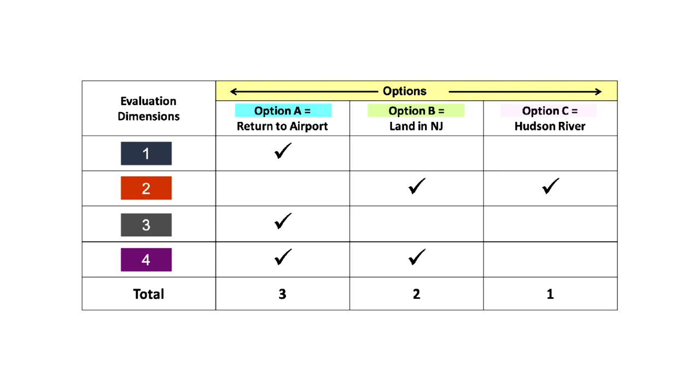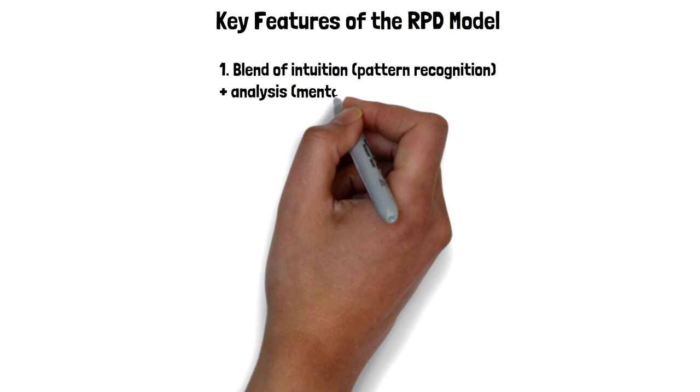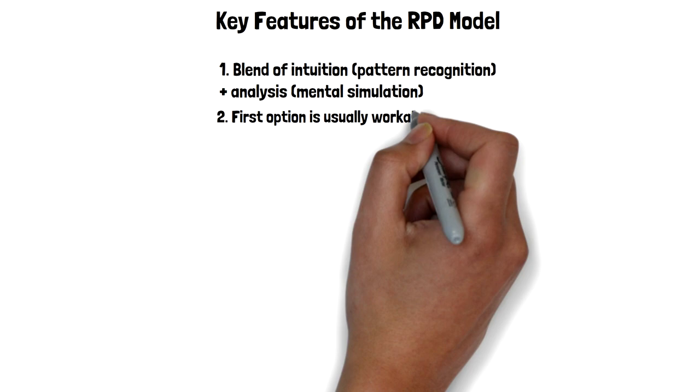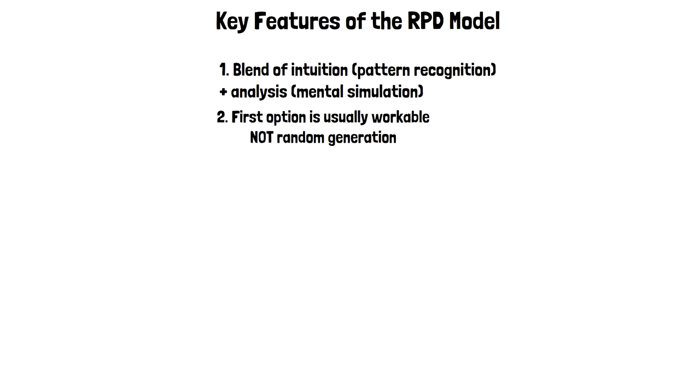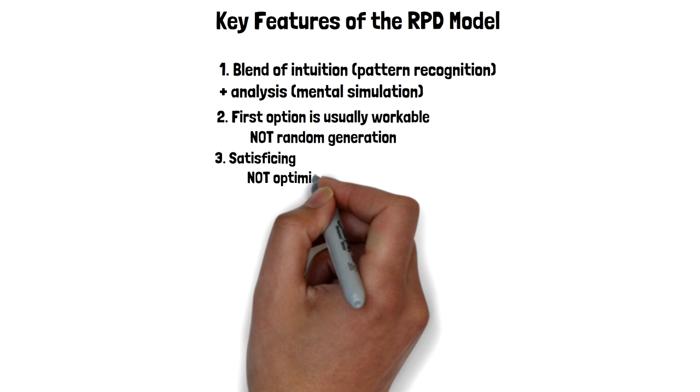So the key features of the RPD model, recognition-primed decision model. First, it's a blend of intuition plus analysis. It's not just intuition. There's also the mental simulation part. Second, the first option that an experienced decision maker generates is usually workable. They're not randomly generating options. Third, it's a model of satisficing. I want the first option that'll work, not the best option.